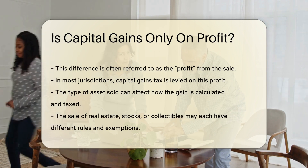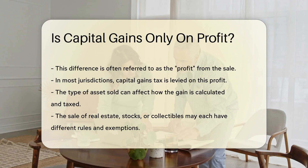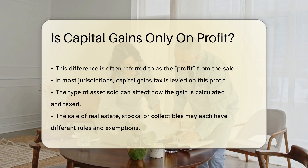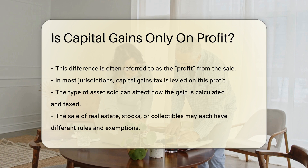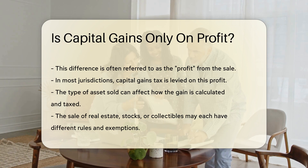However, there are nuances. The type of asset sold can affect how the gain is calculated and taxed. For instance, the sale of real estate, stocks, or collectibles may each have different rules and exemptions.